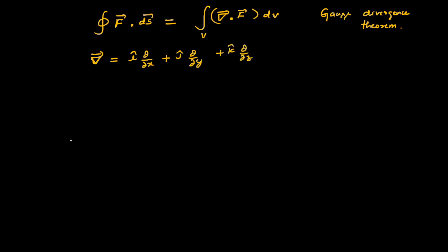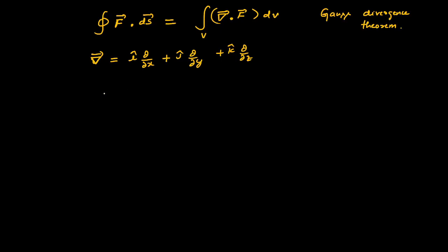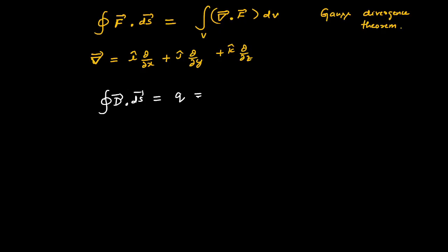Now if we use our equation two here, I have to write divergence of vector D. The closed surface integral of D dotted with dS equals q.